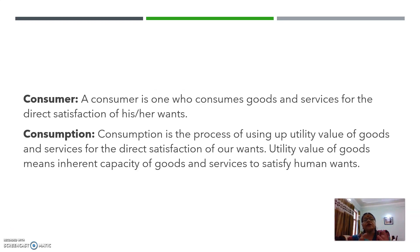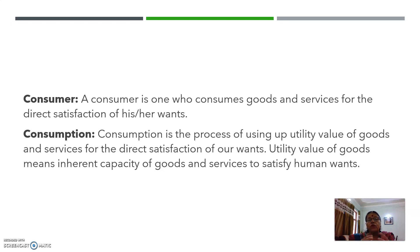Now we have the terms consumer and producer. Who is a consumer? A consumer is one who consumes goods and services for the direct satisfaction of his or her wants. What is consumption? Consumption is the process of using the utility value of goods and services for the direct satisfaction of our wants.